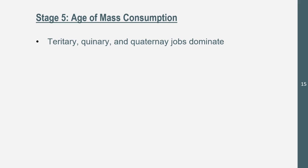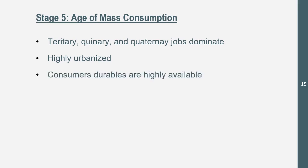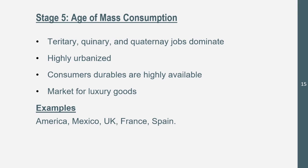Stage five is the Age of Mass Consumption. Tertiary, quaternary, and quinary jobs dominate — no more primary or secondary jobs. We see deindustrialization and highly urbanized areas with lots of cities. Look at Mexico and the United States — both stage five countries with many cities. Consumer durables are highly available, like automobiles. There's also a market for luxury goods — things people don't strictly need. Examples include America, Mexico, the United Kingdom, France, and Spain.